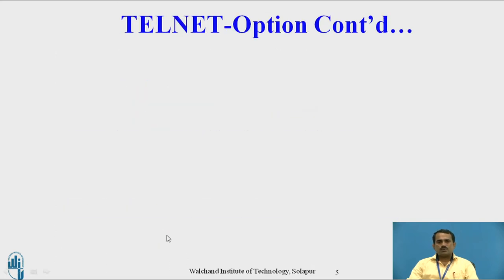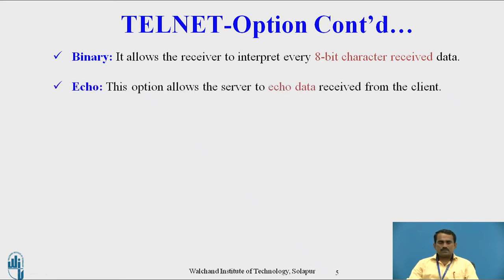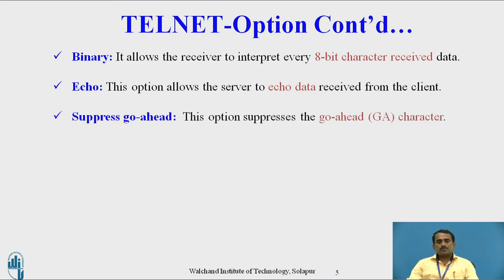To change from one mode to another mode, we use the option type line mode. In detail, we will study different types of modes. The first one is binary — it allows the receiver to interpret every 8-bit character of issued data. Second is echo — it echoes whatever data is received from the client or server side, displaying the client data back.